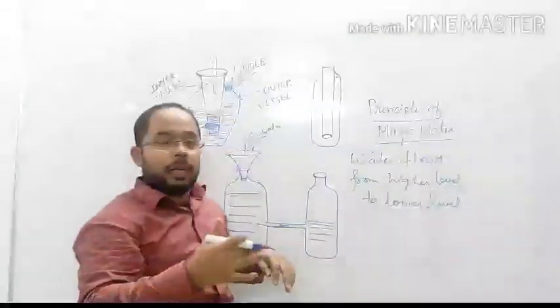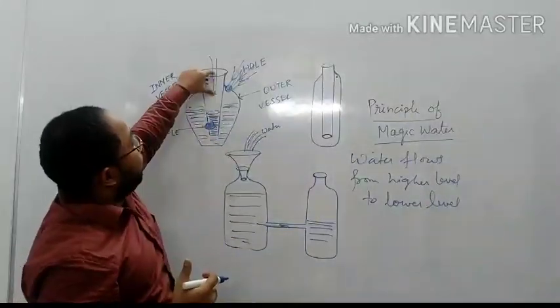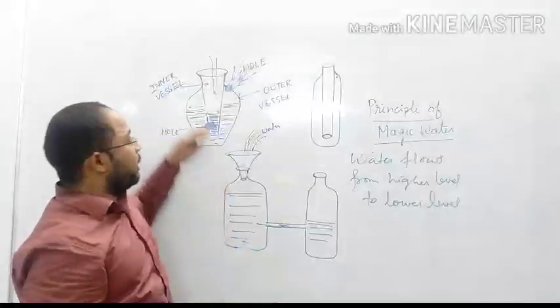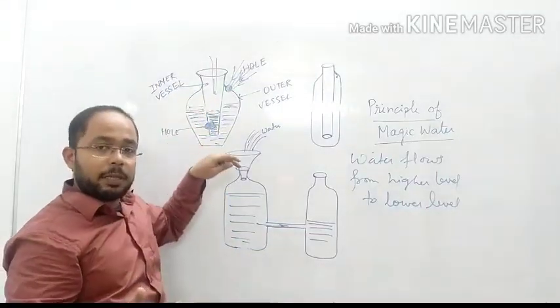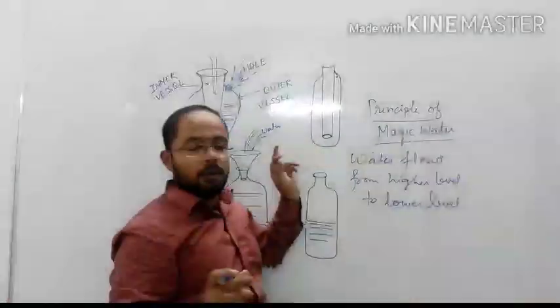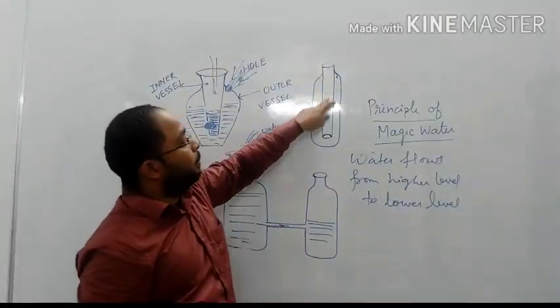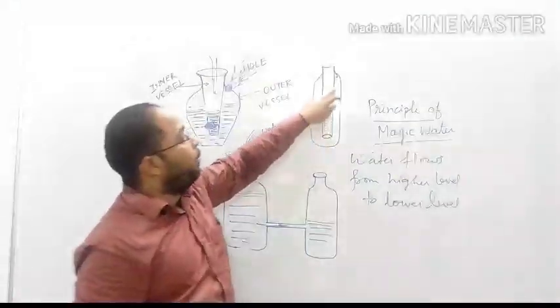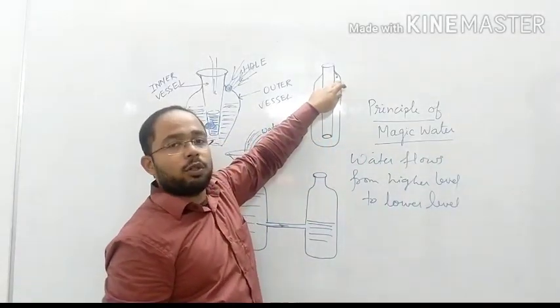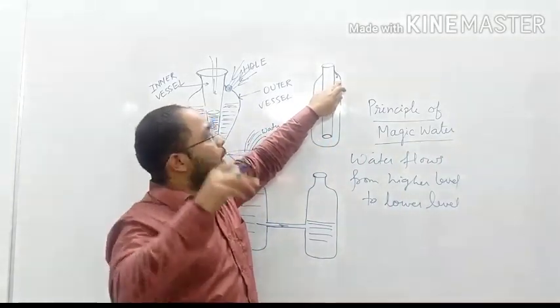And again when he is upside down, the water comes out from this vessel. Same principle I have also used in my magical water bottle, where I have inserted a PVC pipe and one hole was there which was operated while I was doing the upside down.